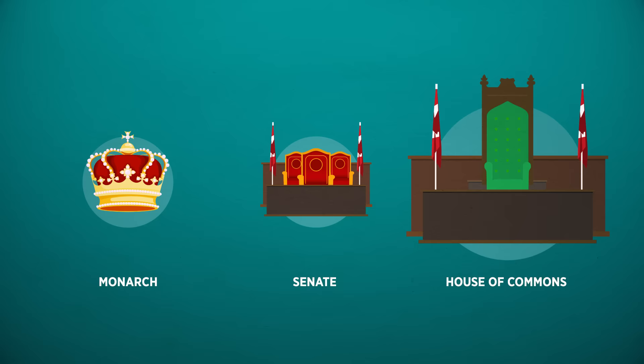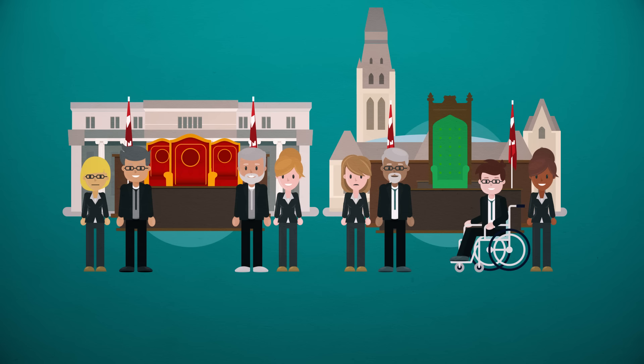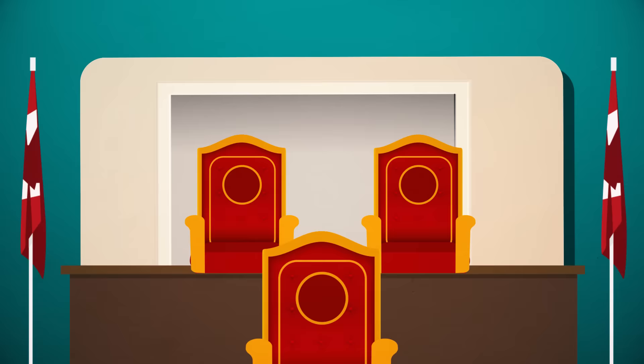Parliament has three parts: the monarch, the Senate, and the House of Commons. The Senate and House of Commons are where Parliamentarians meet to represent Canadians and discuss and debate issues that matter to them.